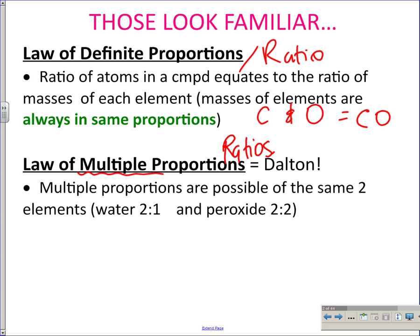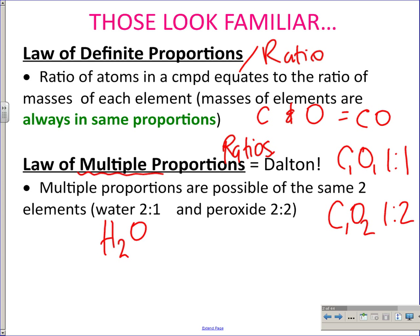Atoms of carbon and oxygen can combine in a one-to-one ratio (CO) or a one-to-two ratio (CO2). Another example: water is H2O — a two-to-one ratio of H to O — and hydrogen peroxide is H2O2, a two-to-two ratio. It's just telling us there are multiple ratios possible for any given elements.